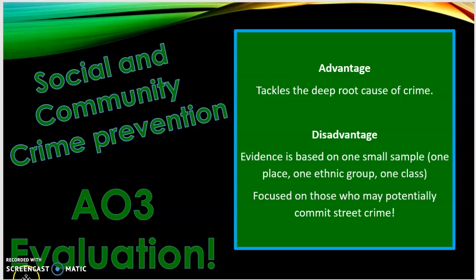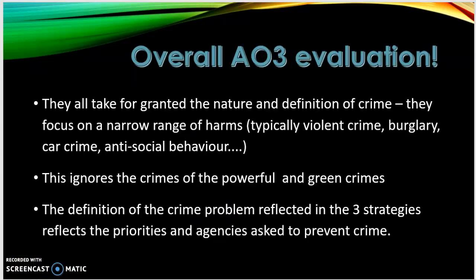Finally, some bonus evaluation: all three strategies tend to take for granted the nature and definition of crime. They focus on a narrow range of harms — violent crime, burglary, car crime, anti-social behaviour — and ignore crimes of the powerful, where you can bring in Marxist theory and green crimes. The definition of crime reflected in the three strategies reflects the priorities of the agencies asked to prevent crime. Put simply, when politicians are tough on crime, they tend to be tough on street crime, rendering all other types of crime invisible.